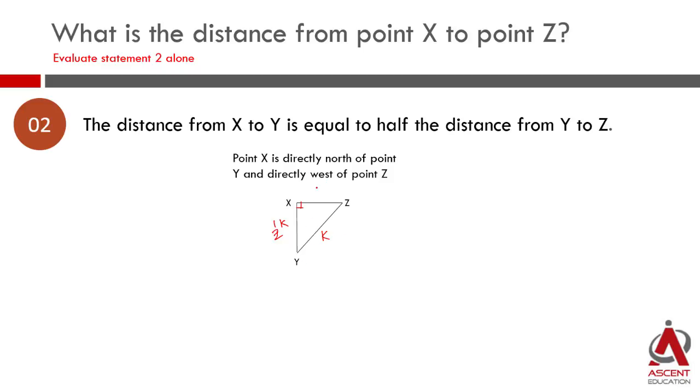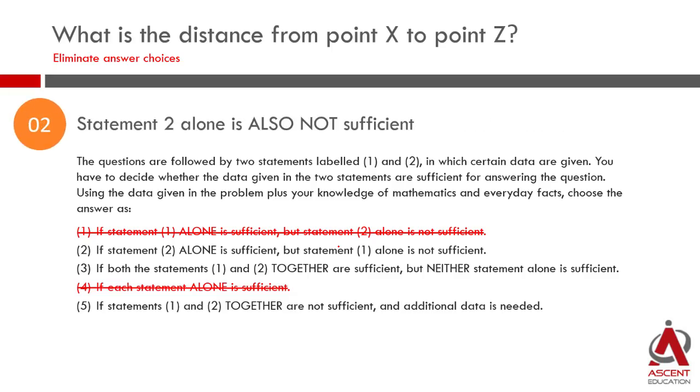We will not be able to find the unique answer for the value of X to Z which is what we need to find out. So statement 2 is also not sufficient to find the answer. We have eliminated choices 1 and 4. But statement 2 is also not sufficient, we can eliminate answer choice 2 also. What are we left with? Either answer choice is either 3 or 5.